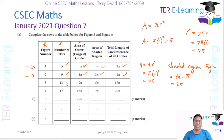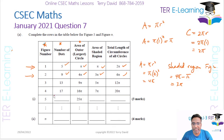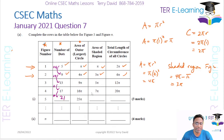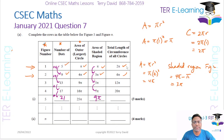Now let's complete the table. For the number of dots column: from figure to figure we keep adding four — so adding four to 17 gives 21. For the area of the shaded region: we're going from π to 3π, adding 2π each time, so the next value should be 9π.